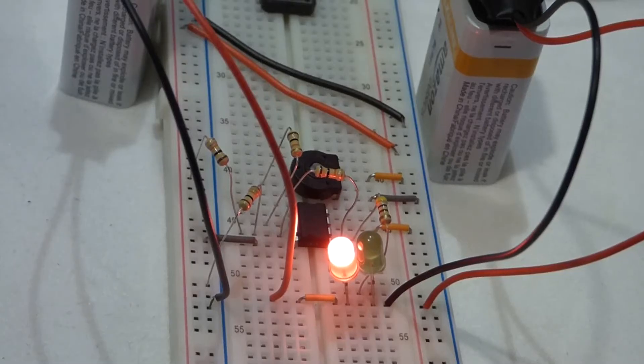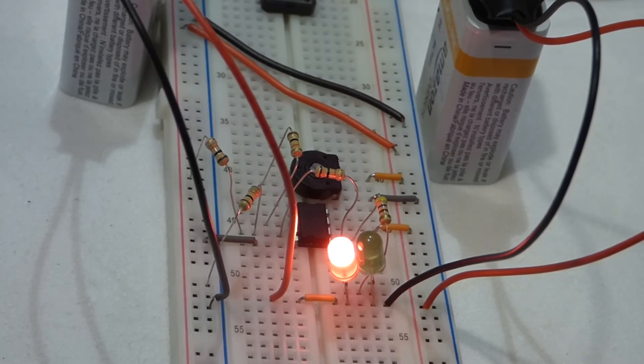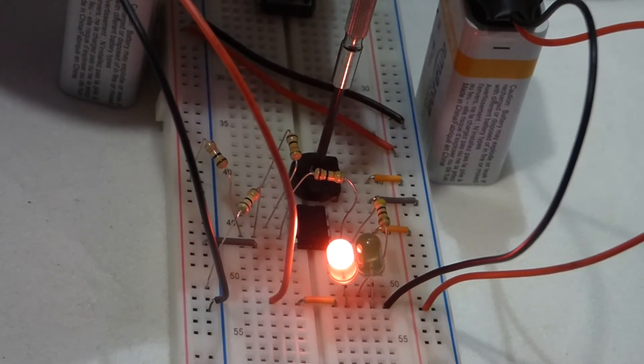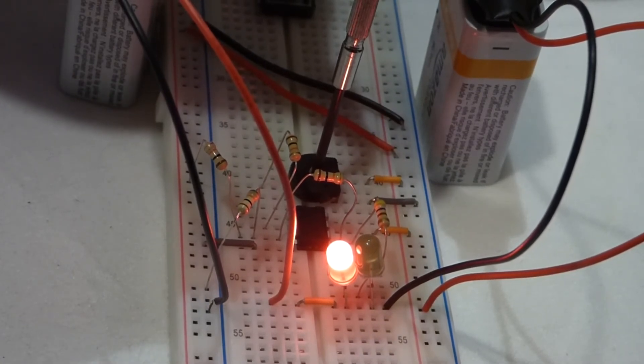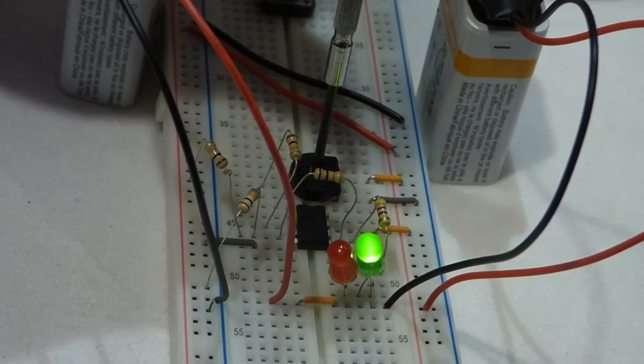So of course now we test it out. So right now the trim pot is most likely in the positive zone, but to check we'll slowly turn it down negative, and now the green LED came on.